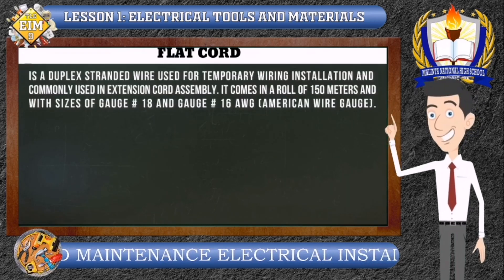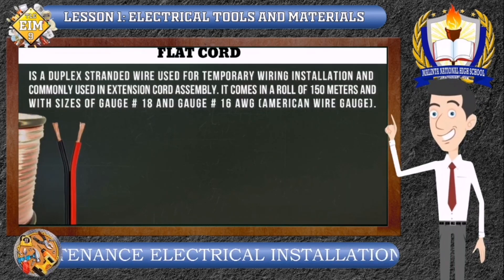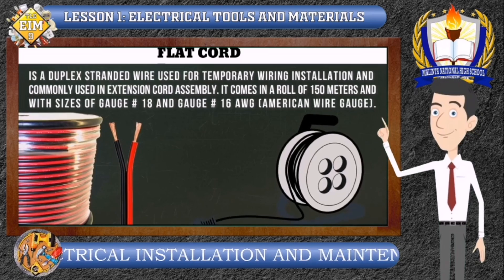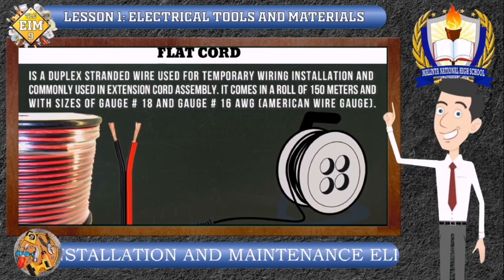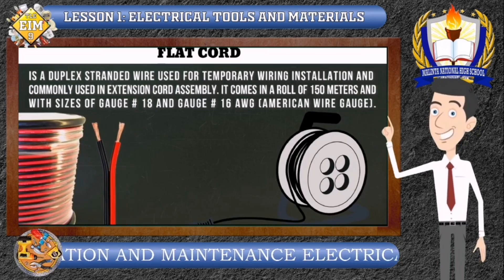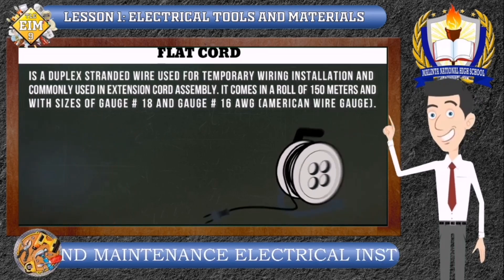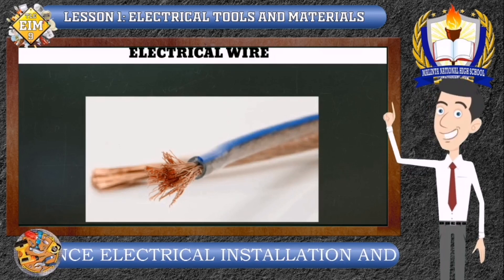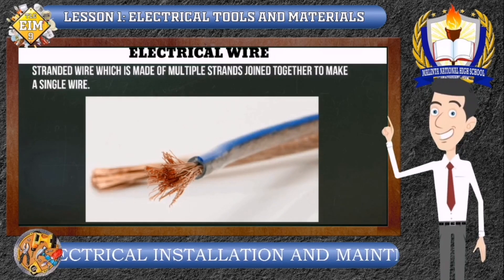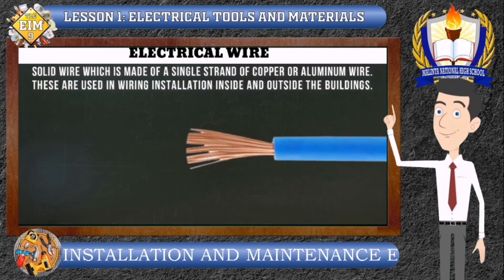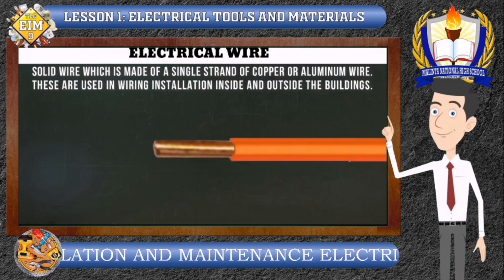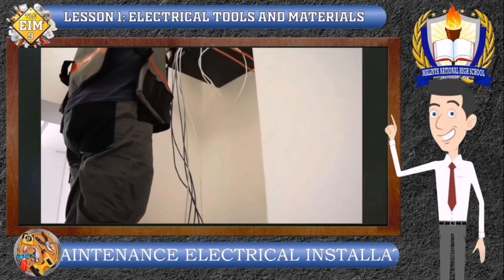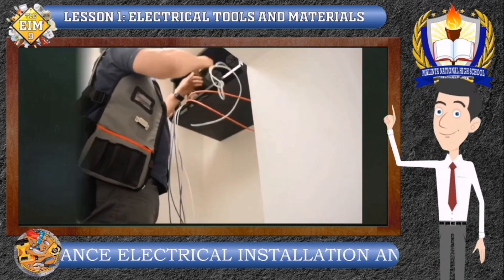Flat Cord. A flat cord is a duplex stranded wire used for temporary wiring installation and commonly used in extension cord assembly. It comes in a roll of 150 meters with sizes of gauge number 18 and gauge number 16 AWG (American Wire Gauge). Electrical Wire or Conductor. An electrical wire or conductor can be a stranded wire, made of multiple strands joined together to make a single wire, or a solid wire, made of a single strand of copper or aluminum. These are used in wiring installation inside and outside buildings.